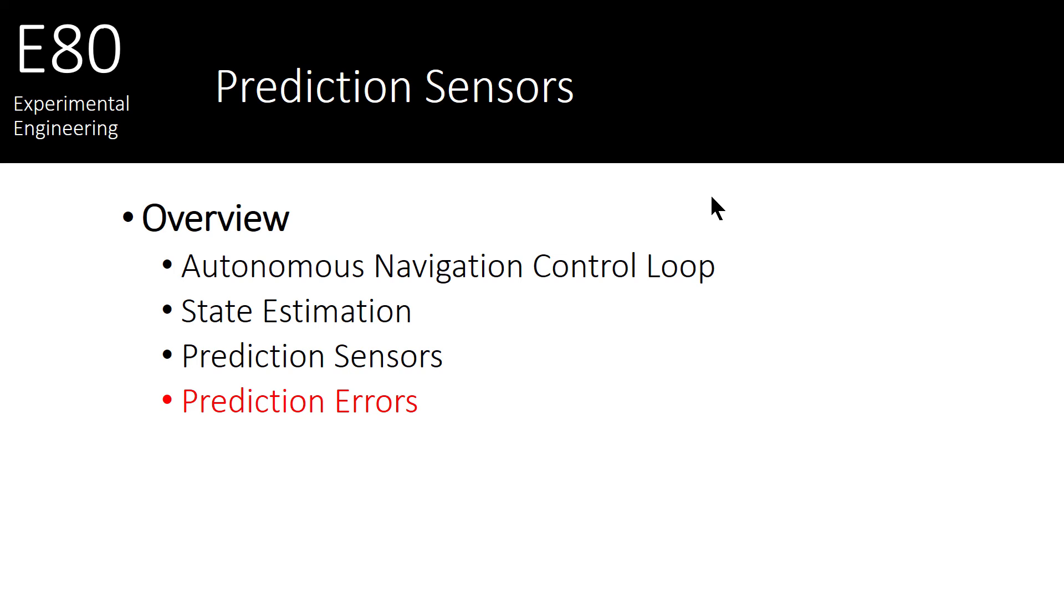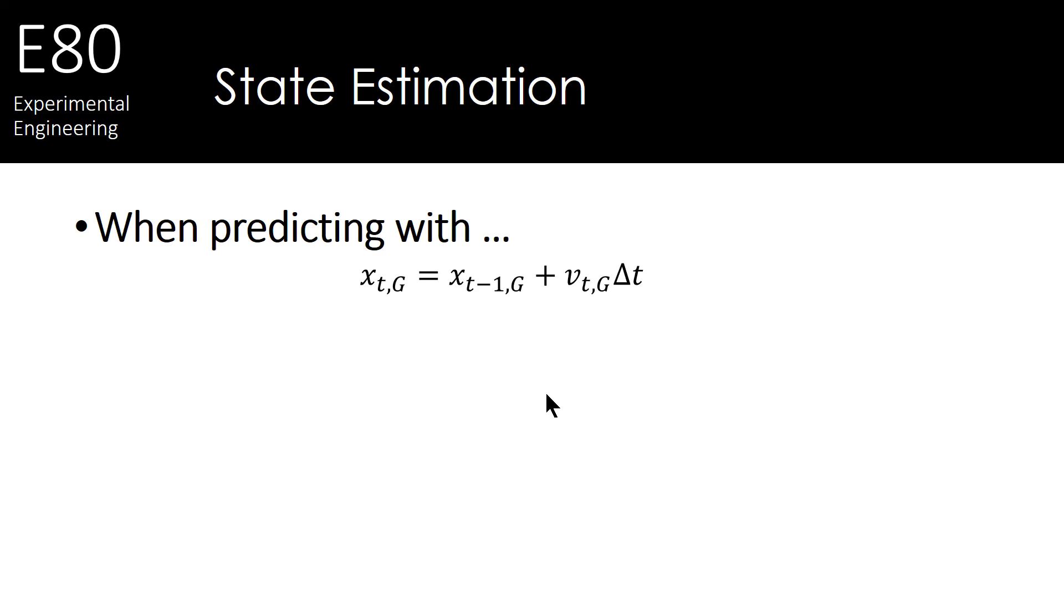Now, before we go on and move to the correction side of things, and the types of correction measurements we might get, let's just note the types of prediction errors, and how they really can grow unbounded. Well, let's look at this particular equation. We predicted the position of our robot in the global frame was our last position, adding to it how fast the robot was moving times how long it was moving for. Seems pretty basic.